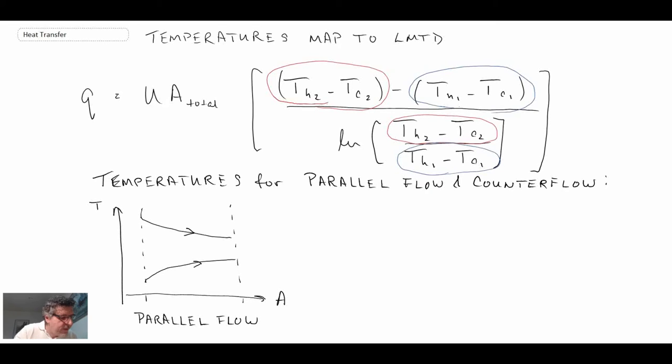So if we're dealing with a parallel flow heat exchanger, what we have is this is T hot one and this is T hot two and this is T cold one and T cold two. So that is the way that we designate the temperatures for a parallel flow double pipe.